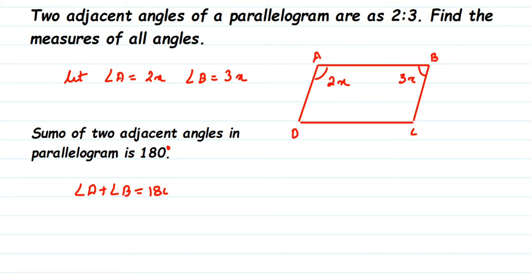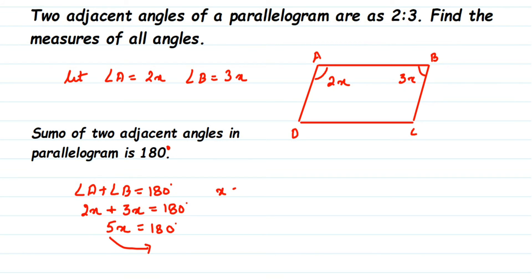Angle A is 2x and angle B is 3x, so 2x plus 3x should be equal to 180 degrees. So 2x plus 3x is 5x, and 5x is equal to 180 degrees. To find x, we transpose 5 to the other side, so x will be equal to 180 divided by 5, which gives us 36. So x is equal to 36.